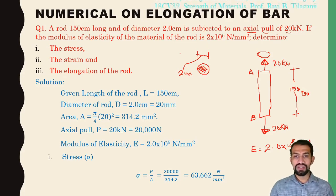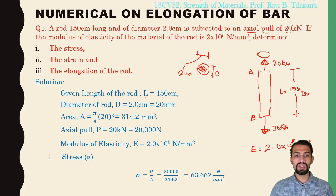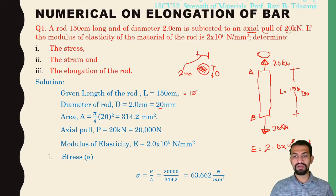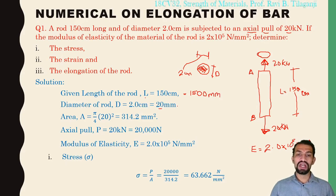Let us list all the given values. Length of the rod L = 150 centimeters; diameter D = 2 centimeters, or 20 mm. Converting 150 centimeters to mm: 150 × 10 = 1500 mm. So length L = 1500 mm and D = 20 mm.